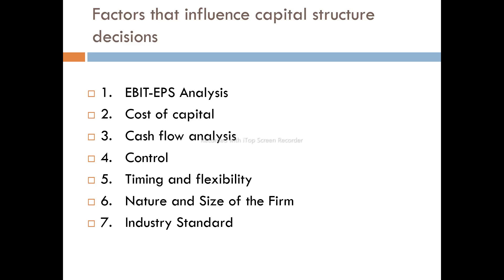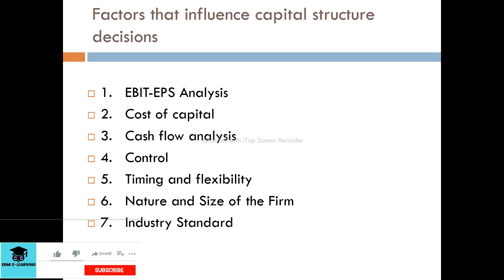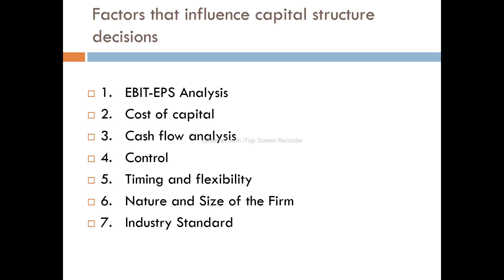The factors that influence the capital structure decision of a firm are: first, EBIT and earnings before interest and tax, or earnings per share analysis; second, cost of capital and cash flow analysis; third, control; fourth, timing; fifth, flexibility; sixth, nature and size of the firm; and seventh, industry standard. All of these can affect our decision when determining the debt-equity ratio in our capital structure.